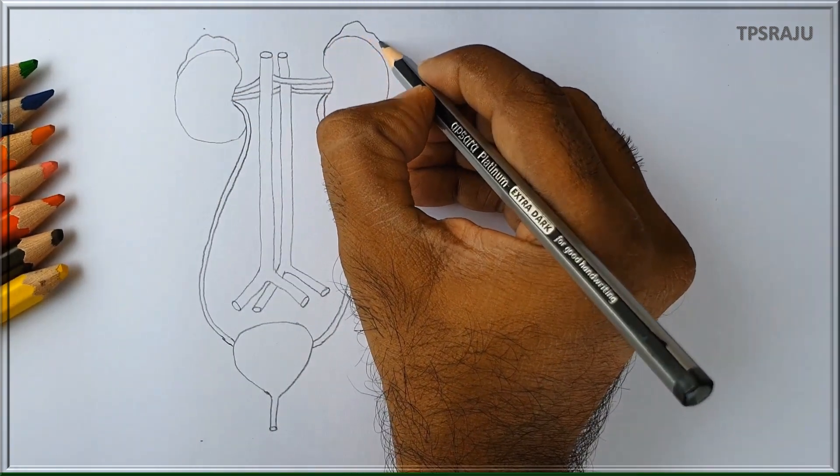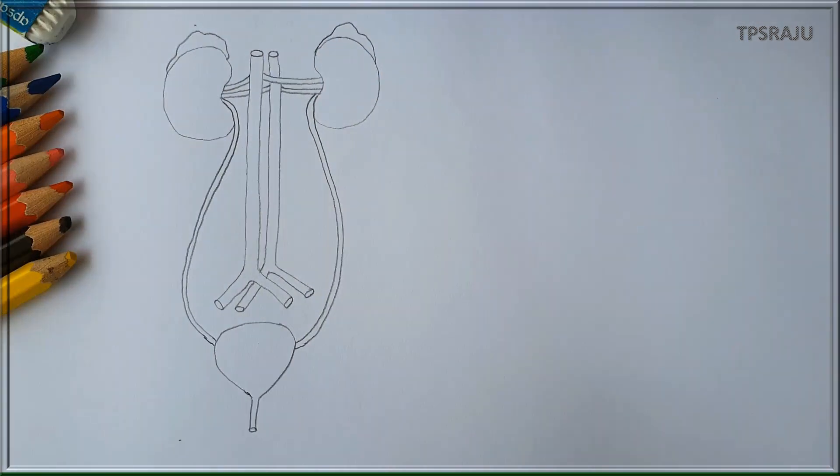Two adrenal glands are present, one on each kidney. These are not related to excretory system. Now the diagram is completed. For better appearance, draw the diagram again with black pen.